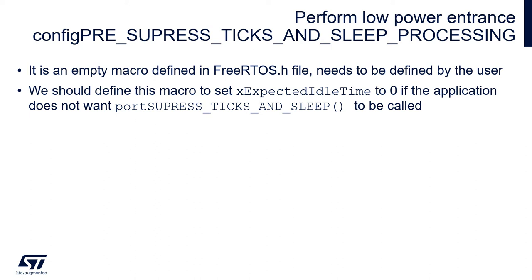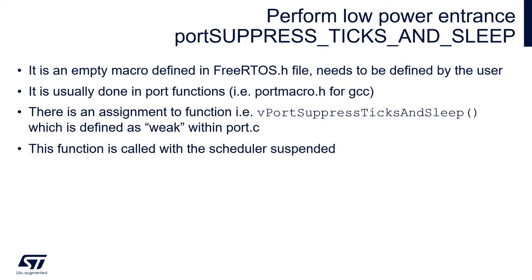We should define this macro by setting x_expected_idle_time to 0 if the application doesn't want to execute port_suppress_ticks_and_sleep. The main macro responsible for entering into low power mode within FreeRTOS is port_suppress_ticks_and_sleep. By default it is defined as an empty macro within FreeRTOS.h file, then it is implemented within port.c file as a function vport_suppress_ticks_and_sleep. This function is defined as weak so it can also be implemented by the user. You can find the connection between port_suppress_ticks_and_sleep and vport_suppress_ticks_and_sleep within portmacro.h file.